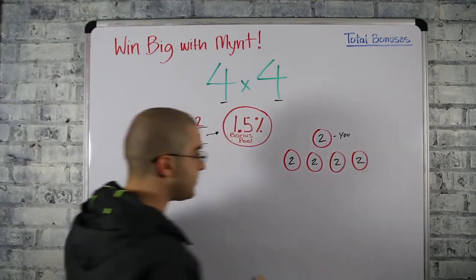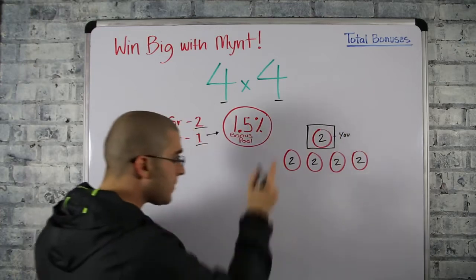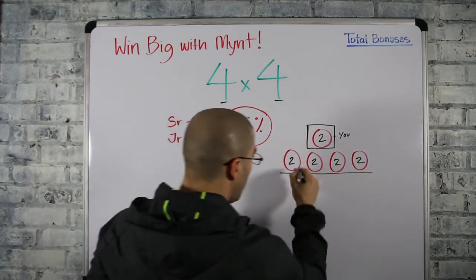They each get two points, okay? Now you are what's called square because you helped four in four. So now each one of these points come down.